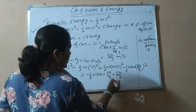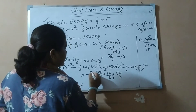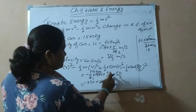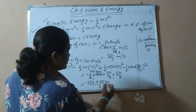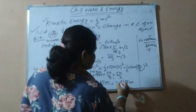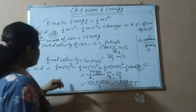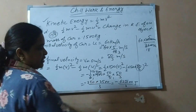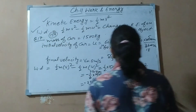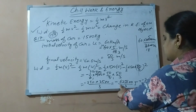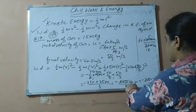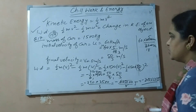When you solve this, simplifying step by step — 1500 divided by 2 gives 750, then multiplying 750 by 2500 over 9 — you get minus 625000 divided by 3 joules. Dividing that out gives approximately minus 208333.3 joules. So the work done to stop the car is minus 208333.3 joules.